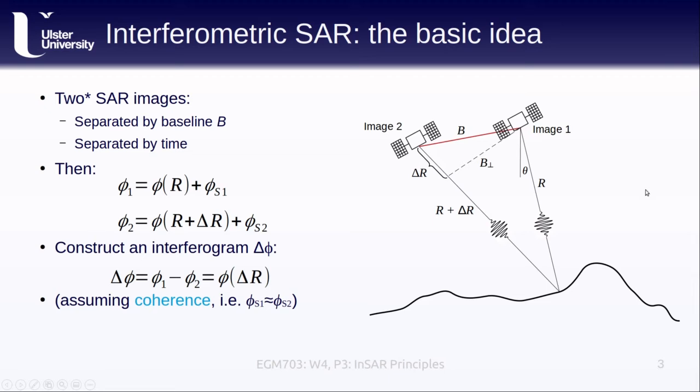Of course, this only works if we have coherence between the two images. That is, the random phase in image 1 is approximately equal to the random phase in image 2. If they're substantially different, then this doesn't quite work out.